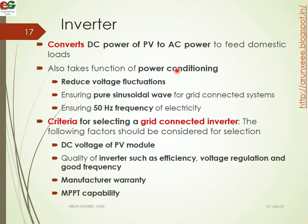Inverters convert the DC power of the PV system to AC power for domestic loads. They also perform power conditioning, which manages voltage fluctuations and ensures a sinusoidal wave at 50 Hz frequency. For selecting a grid-connected inverter, the following factors should be considered: DC voltage of the PV module, inverter efficiency and voltage regulation, frequency, and the manufacturer's warranty.